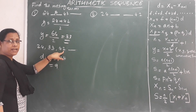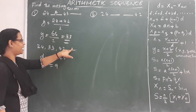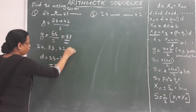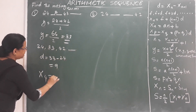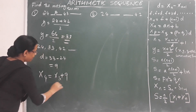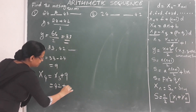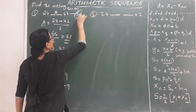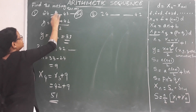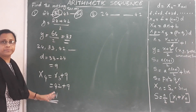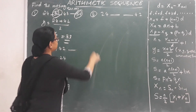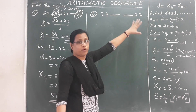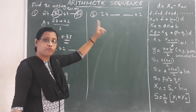Since d equals 9, we can find the fourth term: x4 equals x3 plus 9, that is 42 plus 9, equals 51. So the sequence is 24, 33, 42, 51 with common difference 9.